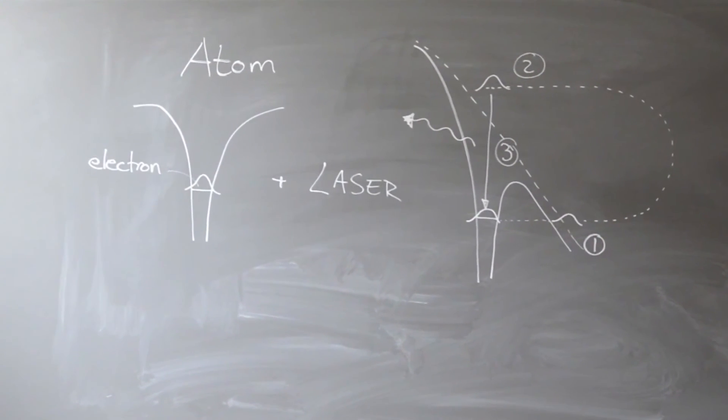It could scatter or knock out a second electron, but it may also recombine, emitting all the accumulated energy in a burst of light. This is so-called high harmonic generation. But that, my friends, is a topic of another movie.